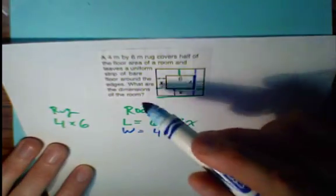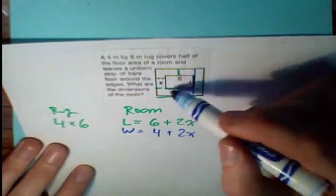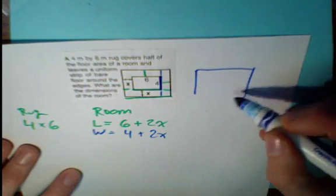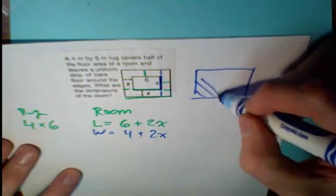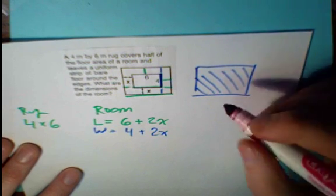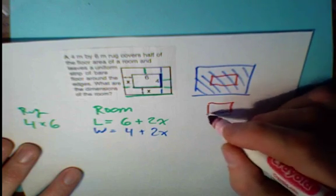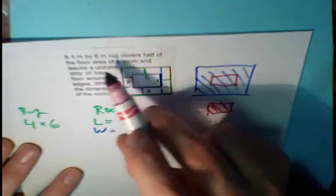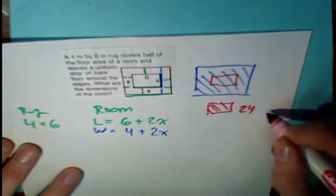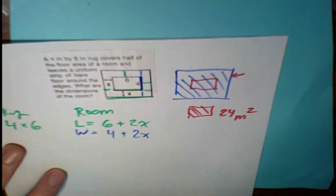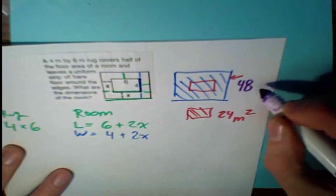Now what else do they tell us? That the rug is covering half of the area. So if this were the room, the room's area, and then we have the rug in the middle, the rug's area is half of that. Now what's the rug's area? 4 by 6 is 24 square meters, so the room's area has to be twice that. The room's area must be 48 square meters.